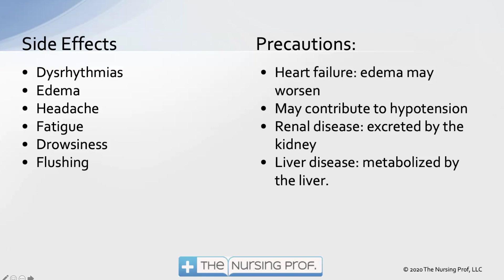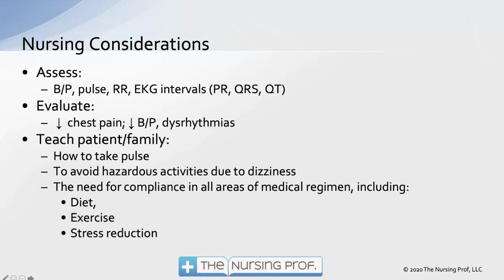Nursing considerations: assess blood pressure, pulse, and respiratory rate. Monitor EKG intervals including the PR interval, QRS, and QT interval. Evaluate for a decrease in chest pain, a decrease in blood pressure if that's the goal, and dysrhythmias. Teach the patient and family how to take a pulse.